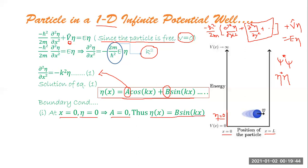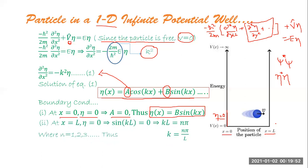For the second boundary condition at x = L: since the particle cannot be outside, η must also be zero at x = L. Substituting, we get B·sin(kL) = 0. Since B cannot be zero — otherwise η would be identically zero, which has no physical significance — we require sin(kL) = 0.